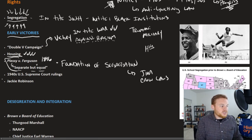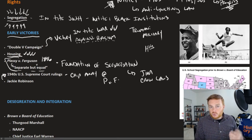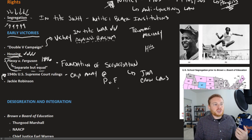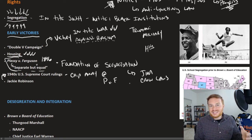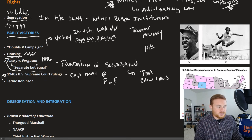Beginning in the 1940s, a series of Supreme Court cases began to chip away at Plessy v. Ferguson — not outright overruling it, but striking down certain parts. For example, there were cases involving discrimination in higher education, and segregation on interstate travel. Busing systems going from a segregated state to a non-segregated state were struck down. These were some minor but meaningful wins for the civil rights movement in the Supreme Court.